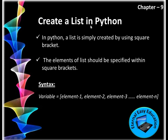How to create a list in Python: a list is simply created by using square brackets. The syntax is: variable = [elements]. The elements of the list should be specified within square brackets. This variable name is user-defined; there is no special keyword for list.